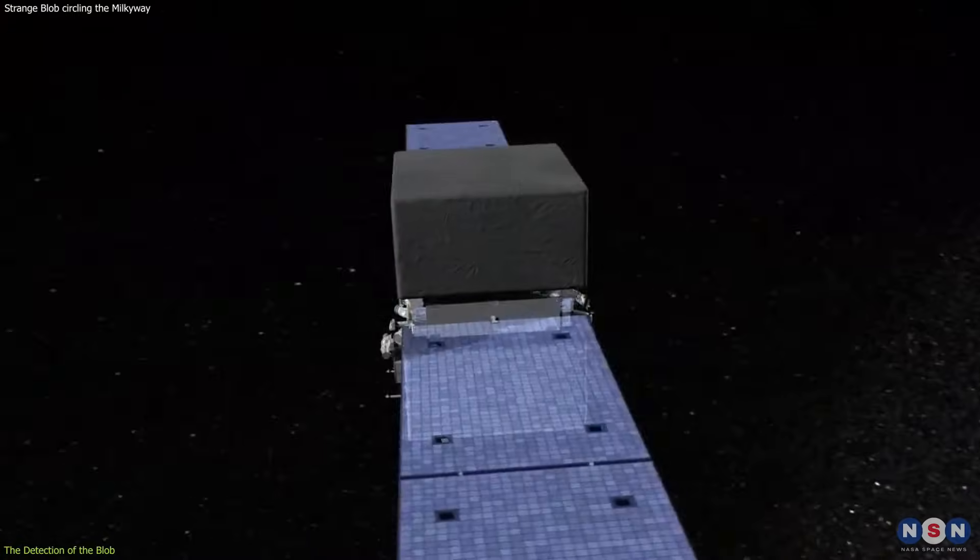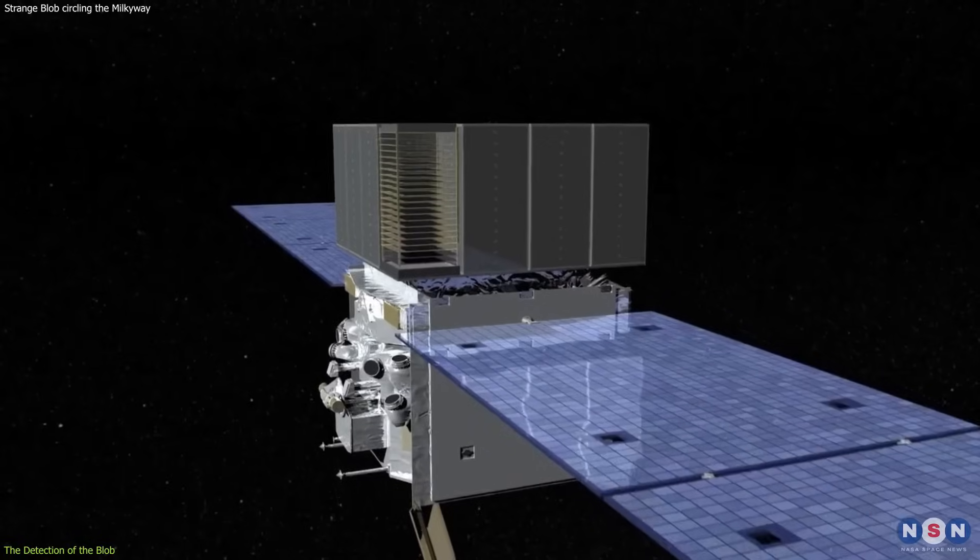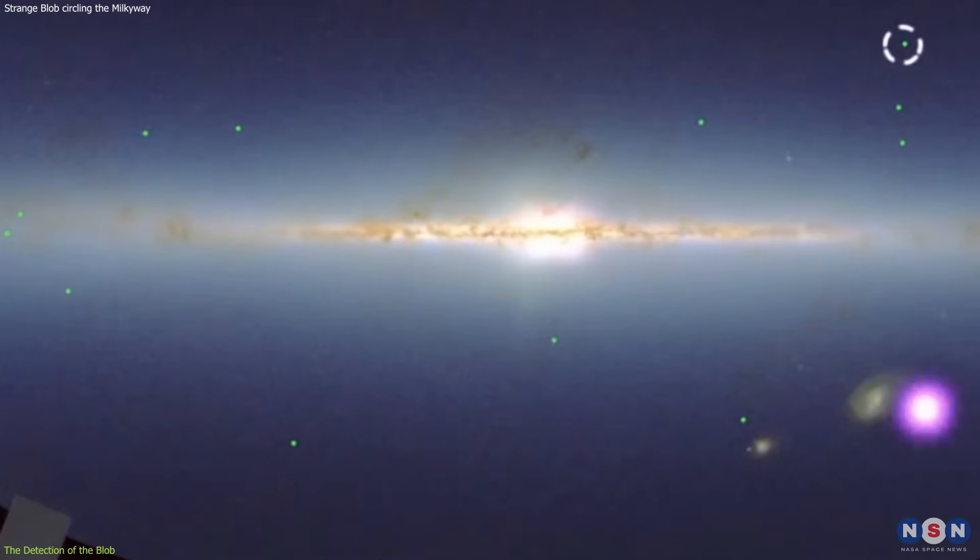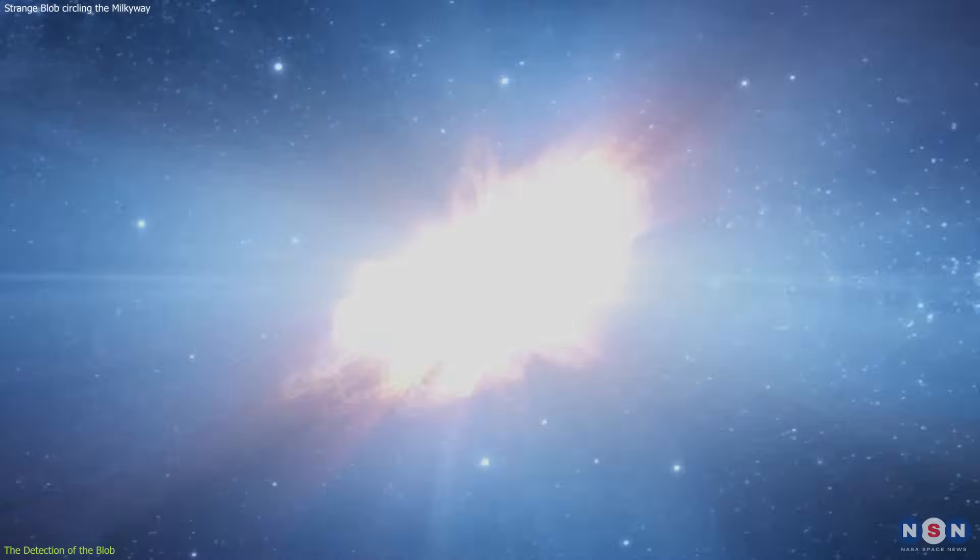That's why astronomers use special telescopes in space, such as the Fermi Gamma Ray Space Telescope, to observe them. The Fermi Telescope has been scanning the sky for gamma ray sources since 2008, such as pulsars, supernovae, and black holes.